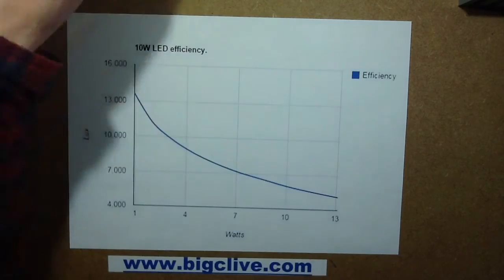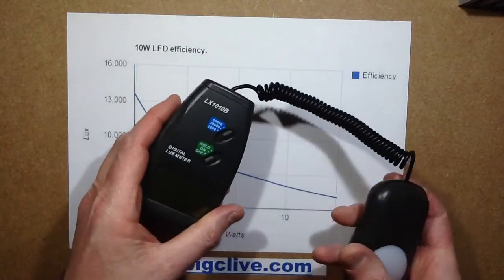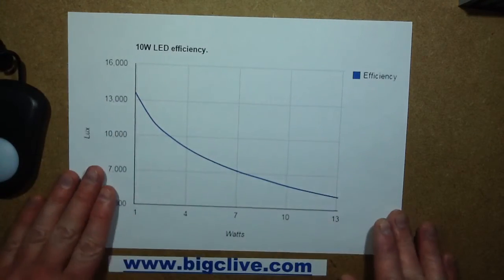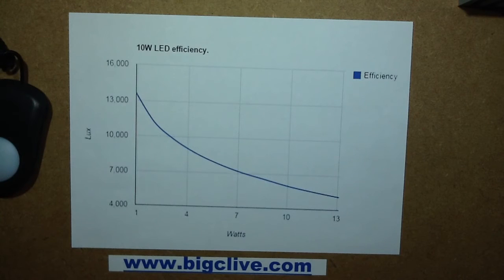Well, I don't know how linear this is, I don't know how accurate it is—it's a generic Chinese unit. But I know that LEDs do tend to fall off with efficiency the harder you drive them, and it's much more dramatic than I was expecting.